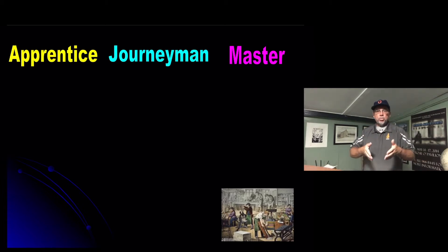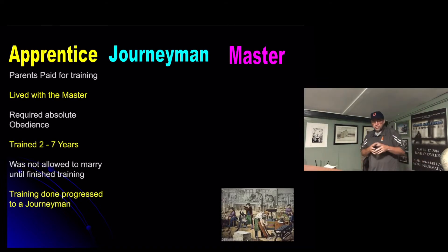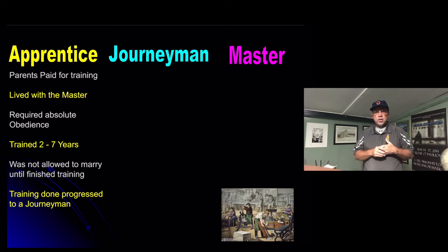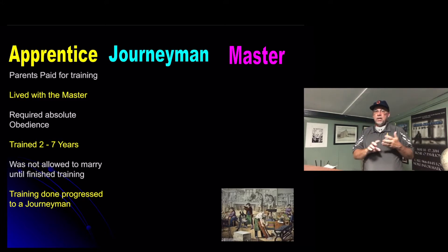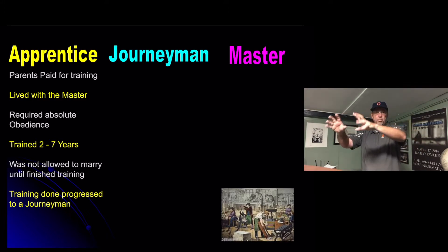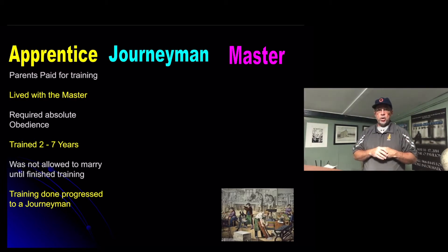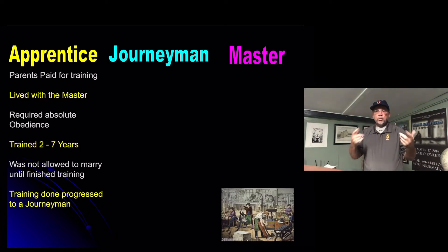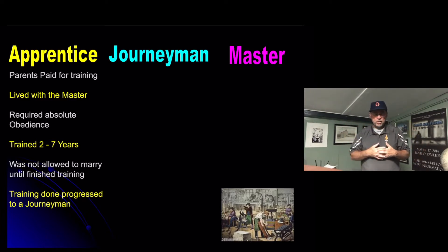Let's break this down with key facts about each position. First, the apprentice: your parents paid for your training to a master. Around seven to ten years of age — common across several ancient civilizations — you would be put into a position to become an apprentice, sometimes as early as seven years of age. You lived with the master within his family, so not only did you learn the trade, you also had family chores and obligations within the master's house.